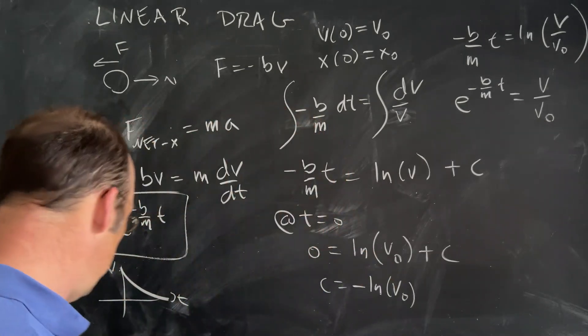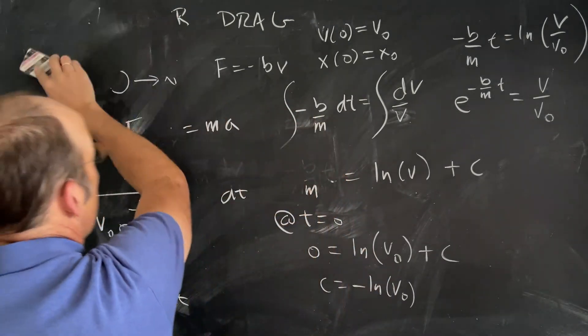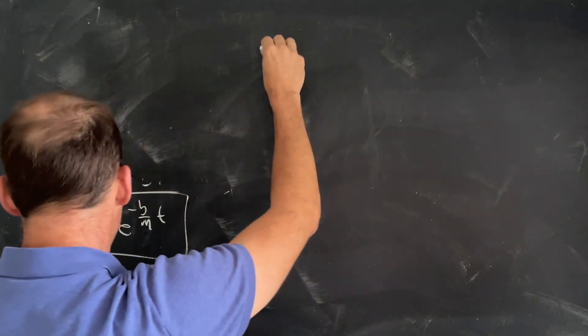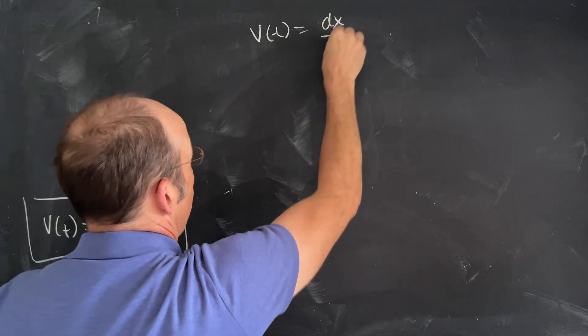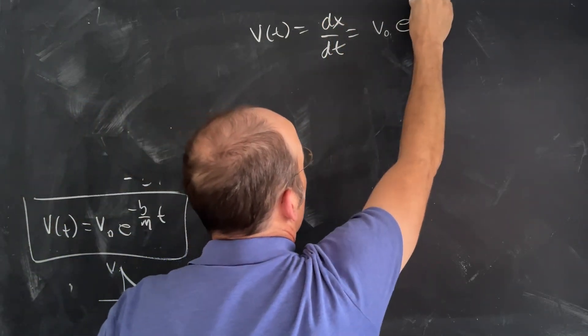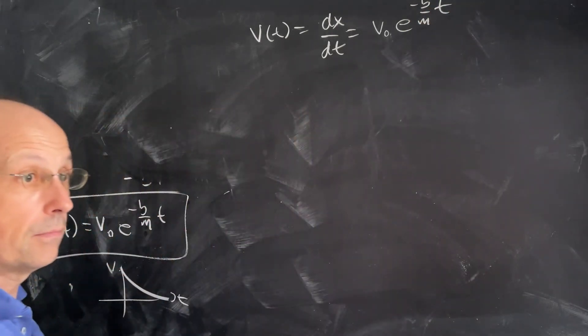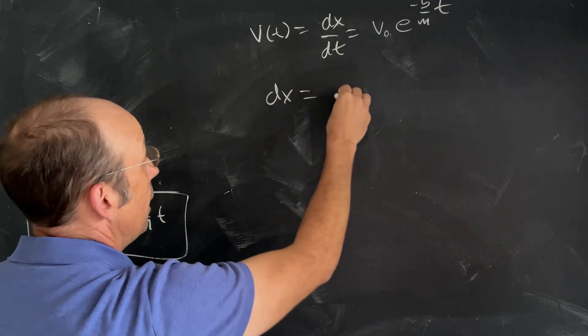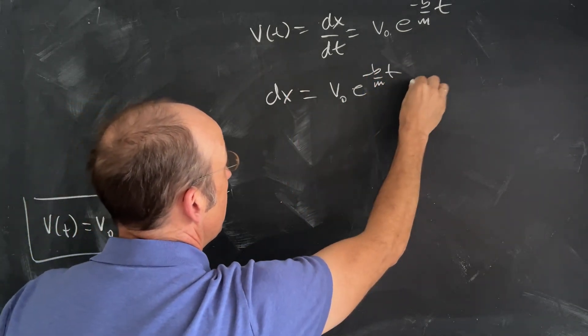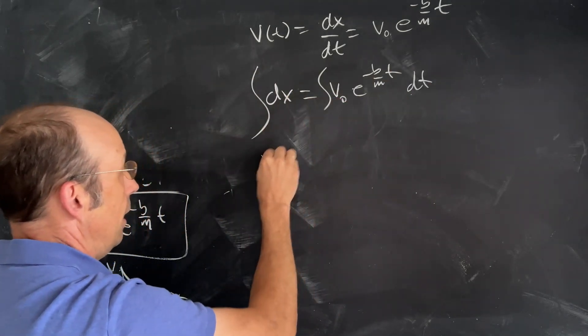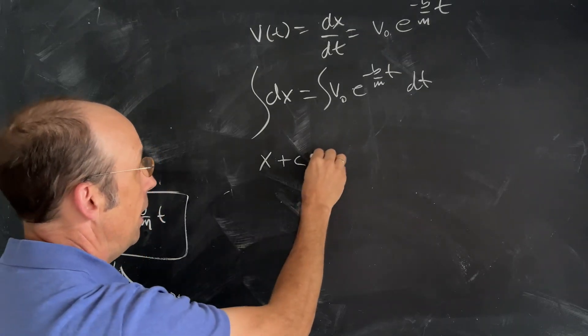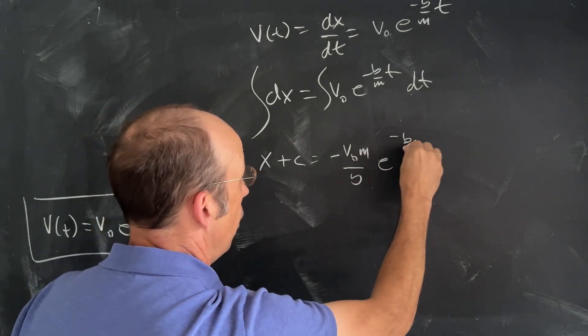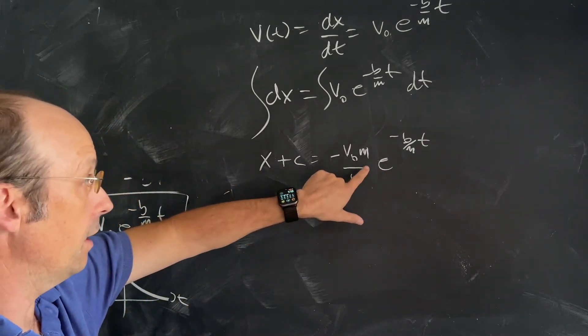What about position as a function of time? Let's find the position. I know v as a function of time is the derivative of x with respect to time, and that equals v₀ e to the negative b over mt. This is pretty easy. I can just multiply both sides by dt and get dx equals v₀ e to the negative b over mt dt. I can integrate both sides.